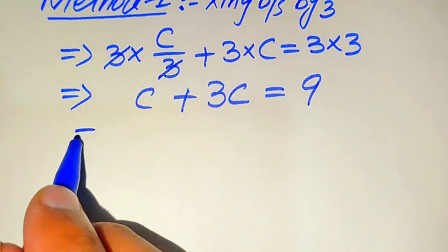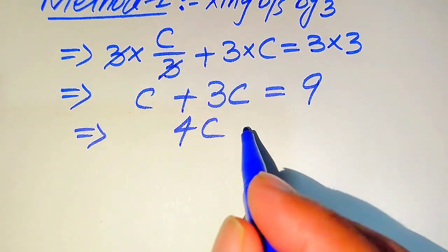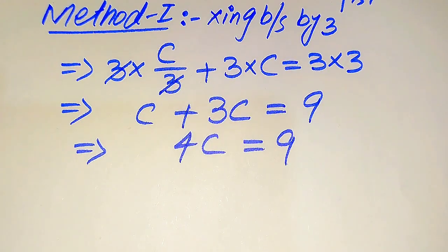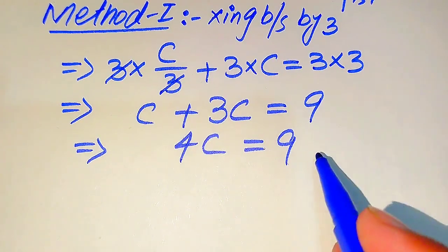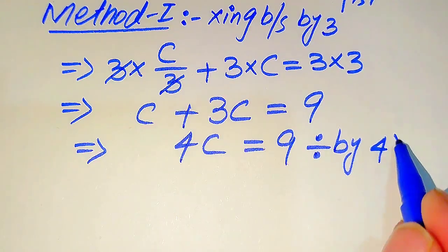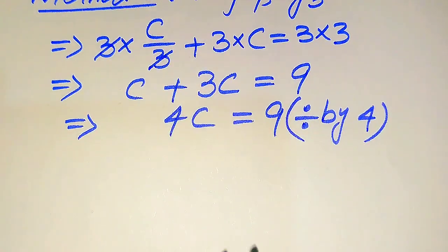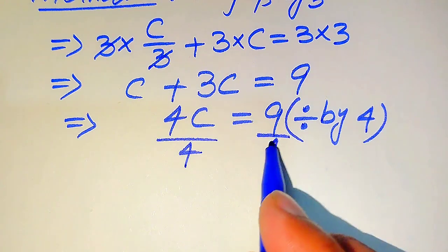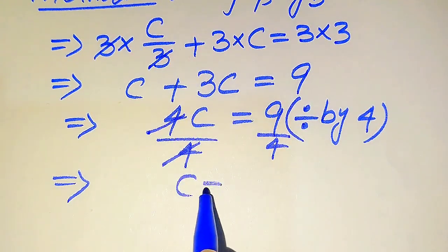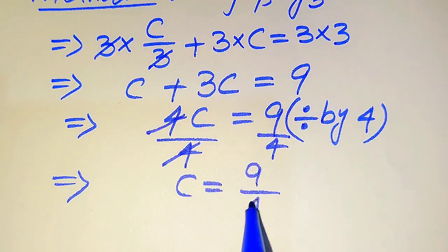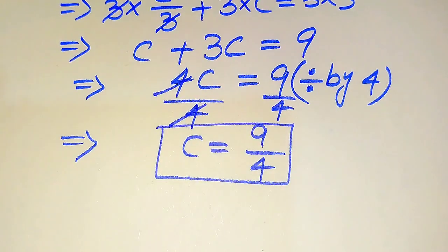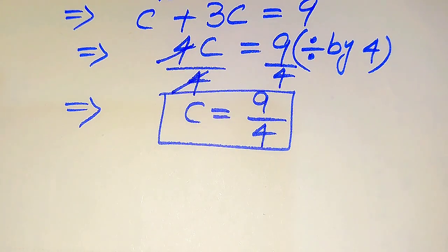We get C plus 3C equals 4C equals 9. Our target is to find the value of C, so we divide both sides by 4. This 4 cancels out, and we get C equals 9 divided by 4. This is the value of C obtained from the first method.